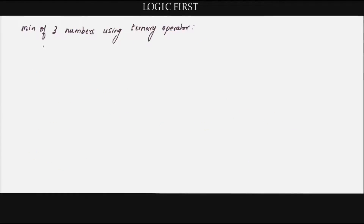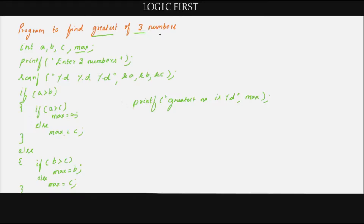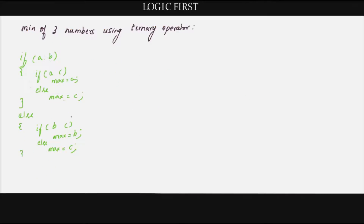Now let's write a program to find the minimum of three numbers using the ternary operator. As mentioned, it's not advisable to convert nested ifs into a ternary because the code will not be easily understandable, but let's learn it to gain expertise. We already wrote a program to find the greatest of three numbers using nested if — if a greater than b and a greater than c, max is a; if not, it has to be c. We'll use the same logic but with less-than to find the minimum.